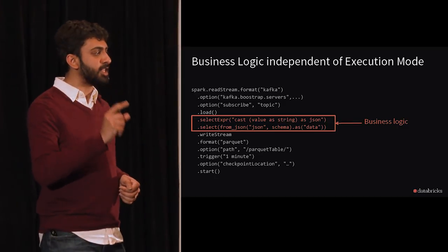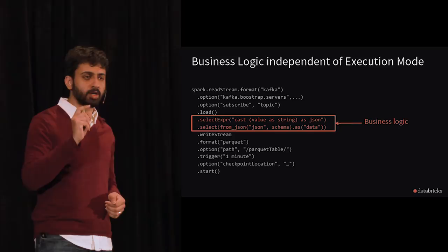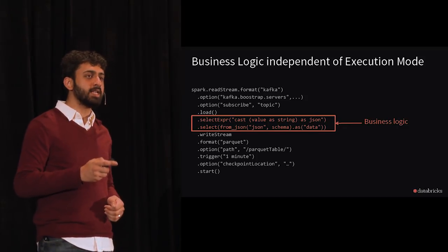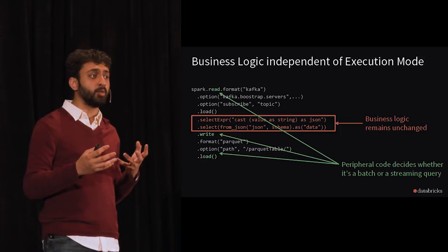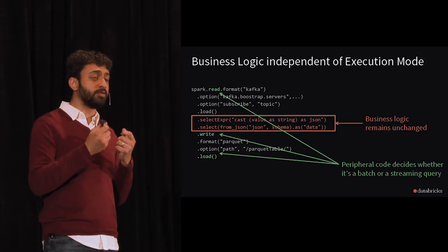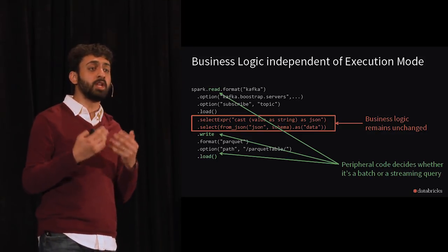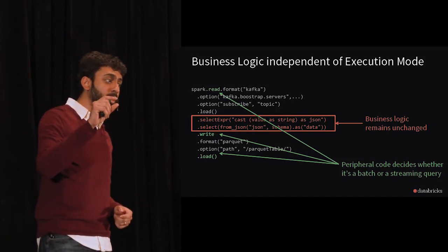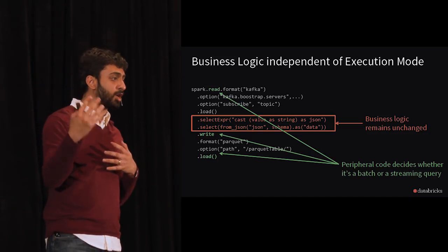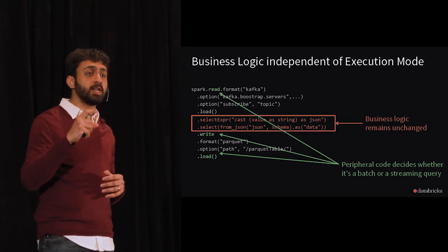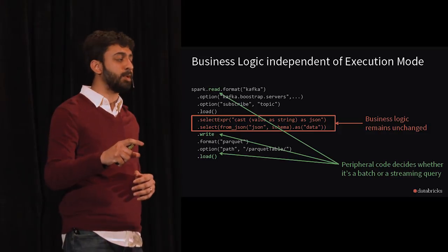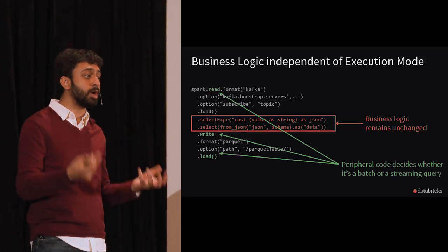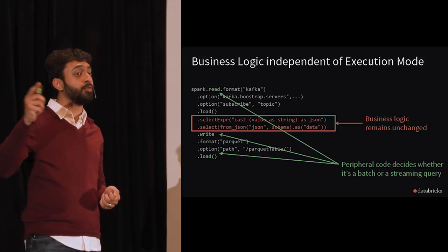The core business logic of how you're transforming data is just a couple of lines. Everything around it is peripheral code specifying where to read or write and how to process. If you just flip that peripheral code to use `read` and `write` instead of `readStream` and `writeStream`, your query automatically becomes a batch query. Your business logic remains completely unchanged — whatever map or reduce functions you've applied, none of that needs to change because it's the same statically typed API.